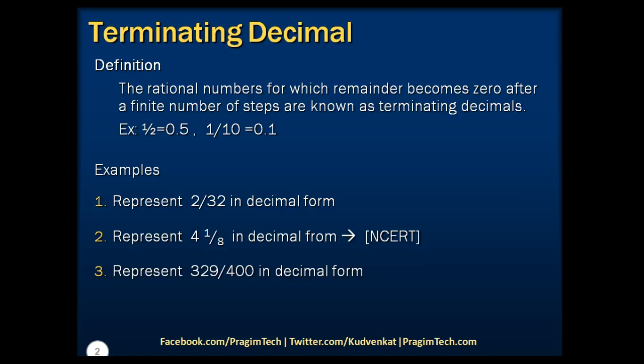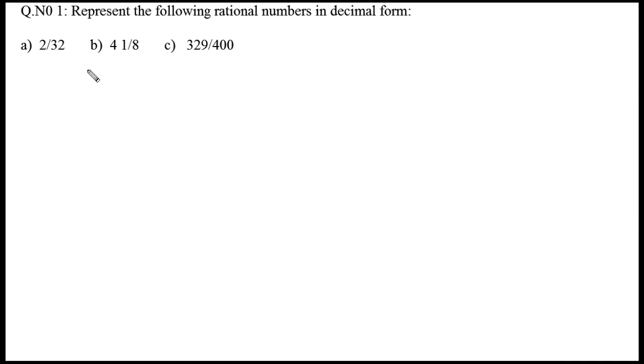Let's understand terminating decimals by considering the following examples. We'll see how we can solve these examples on the board. The question given is: represent the following rational numbers in decimal form.